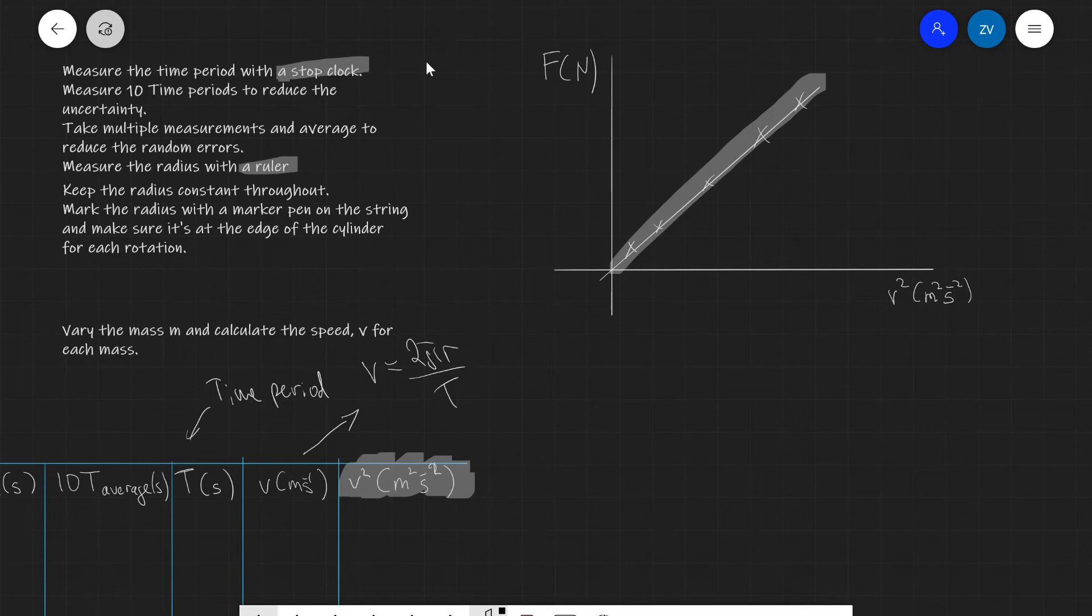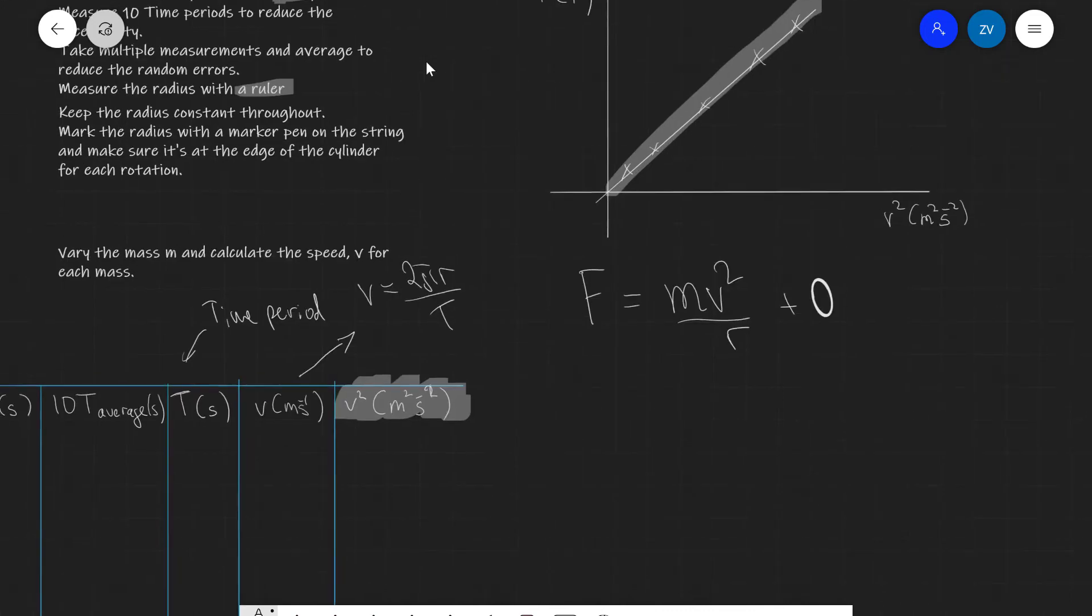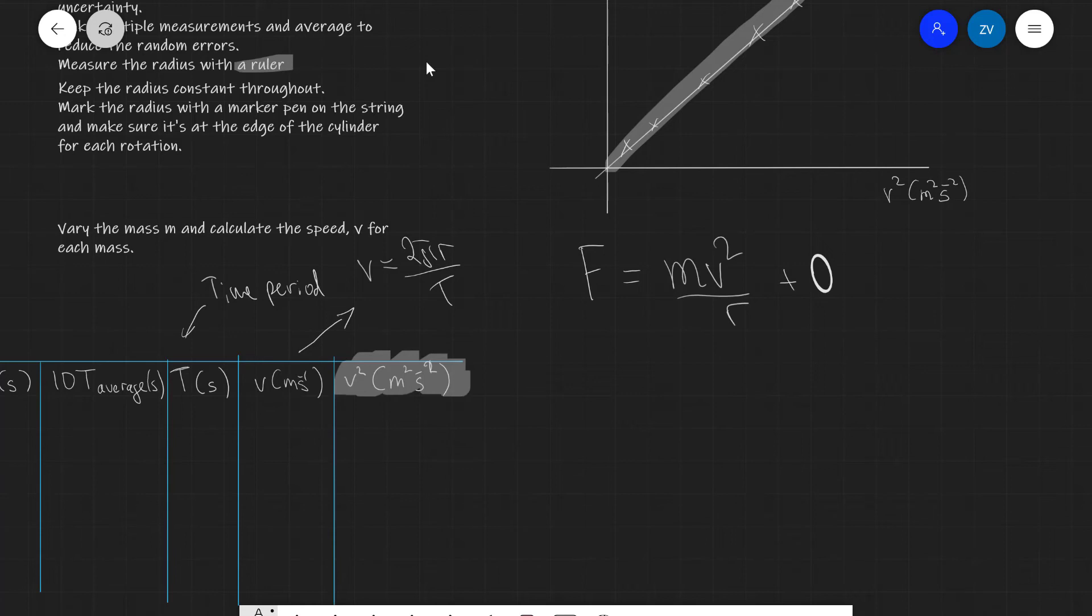Let's do our y equals mx plus c analysis. Our equation for centripetal force is that f is equal to mv squared over r. I'm going to add a little plus zero because I'm expecting the graph to go through the origin. The equation for a straight line is that y is equal to mx plus c.